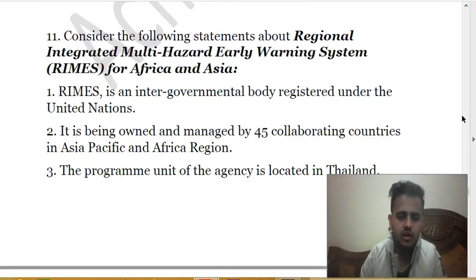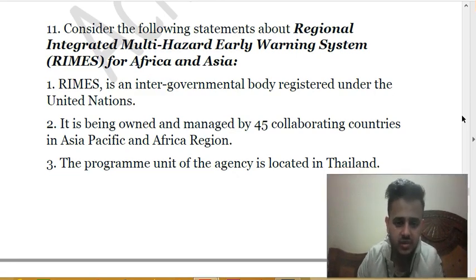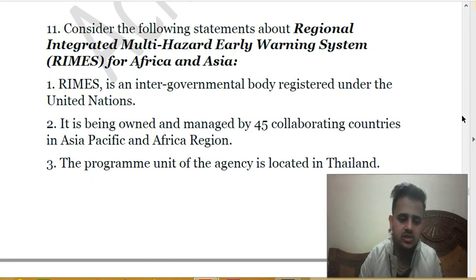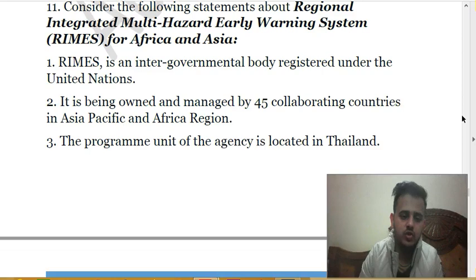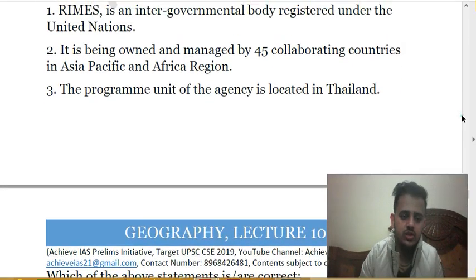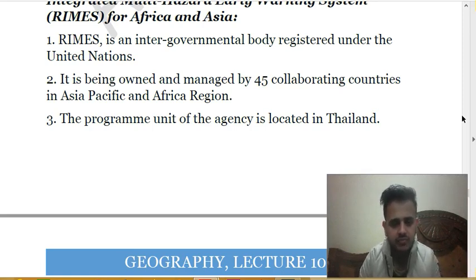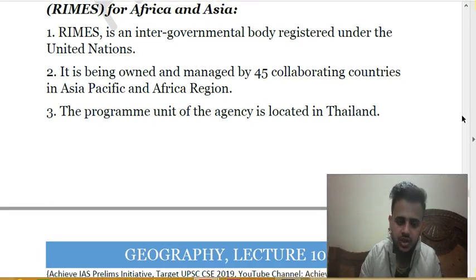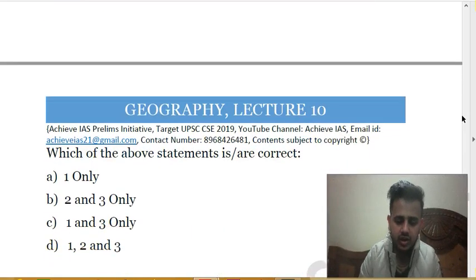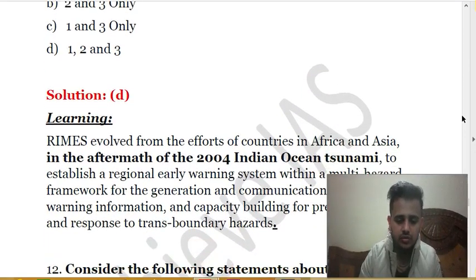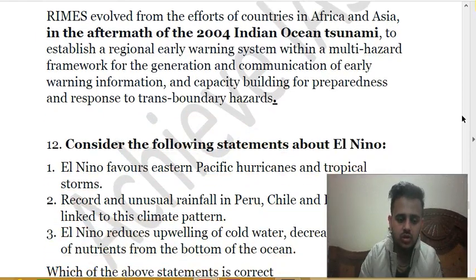The eleventh question is about RIMES — the Regional Integrated Multi-Hazard Early Warning System. Statements: (1) it is an intergovernmental body registered under the United Nations; (2) it is owned and managed by 45 collaborating countries in the Asia-Pacific and Africa region; (3) the program unit is located in Thailand. All three statements are correct. India is currently chairing RIMES. It is a multi-hazard early warning framework that came into existence in the aftermath of the 2004 Indian Ocean tsunami.